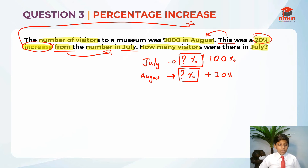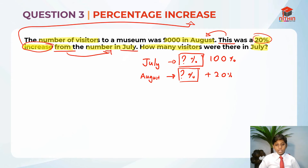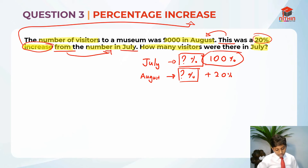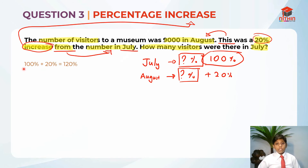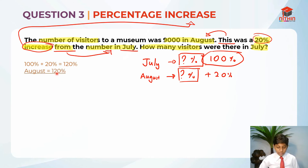So if I say July was a 20% decrease from August, that means August becomes 100% while July becomes a decrease of 20%, so 100% minus 20% equals July. This is the same concept we apply to August right now. So July is 100%. August was a 20% increase, so 100% plus 20% equals 120%. So August is 120%.